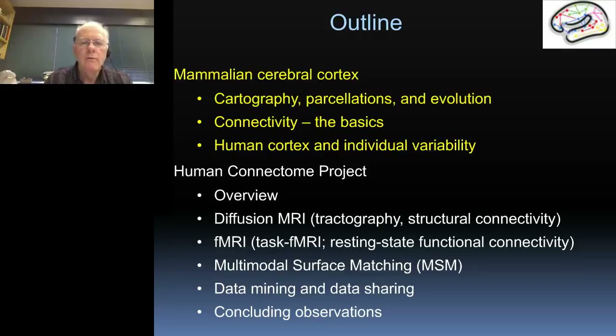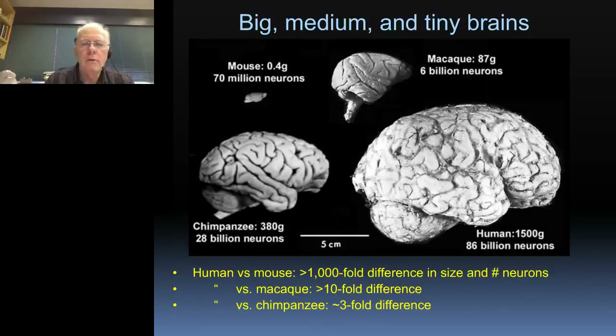Brains do indeed come in very different sizes. Our brains are quite large — several times larger than that of the chimpanzee, our closest living relative — which in turn is several times larger than that of the macaque monkey, which in turn is 100 times larger than the intensively studied but lowly mouse brain.